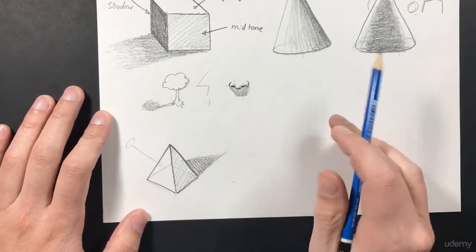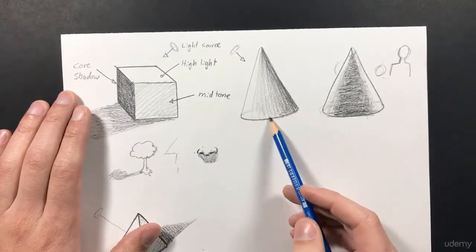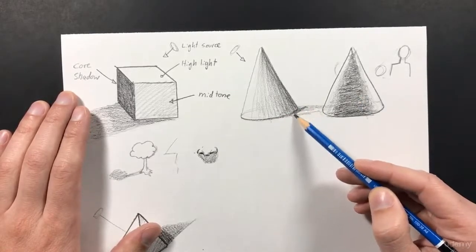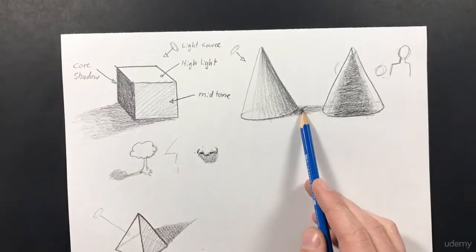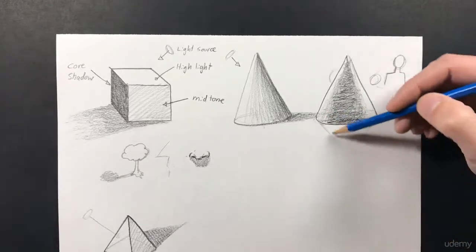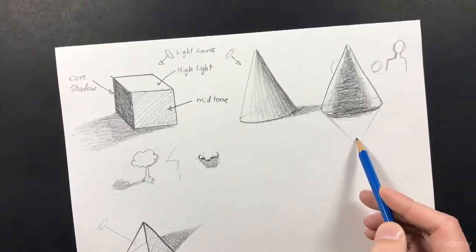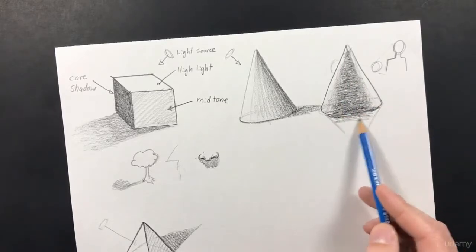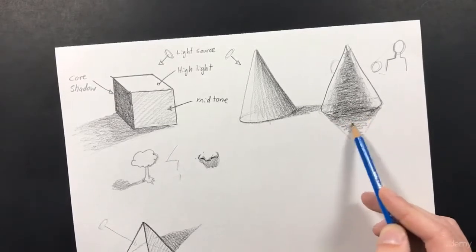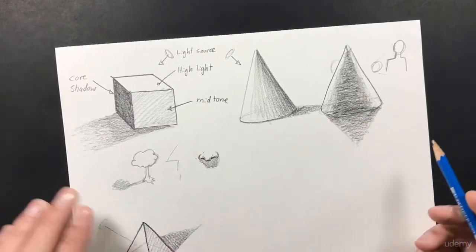We also need to add cast shadows onto the cones. With the light source coming from this side, we add the cast shadow going off in that direction for the first cone. For the backlit cone, the cast shadow comes off in the opposite direction since the light is behind it. Remember that cast shadows should get lighter the further away they get from the object.